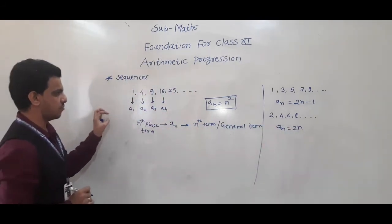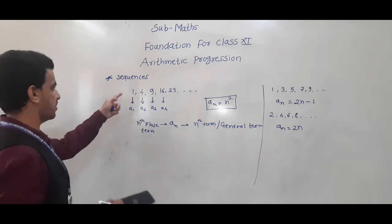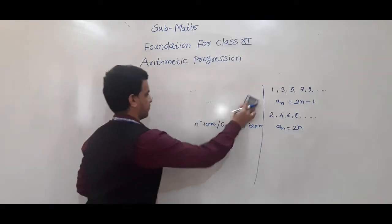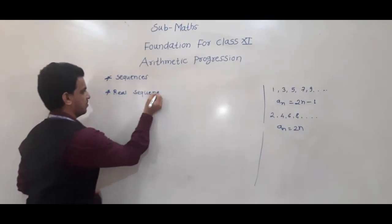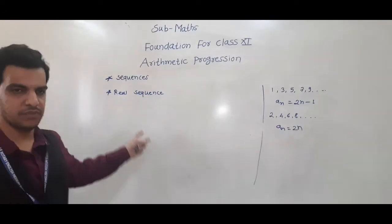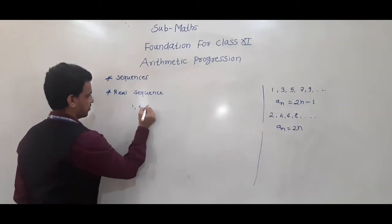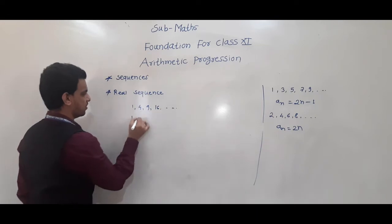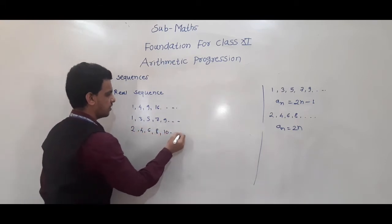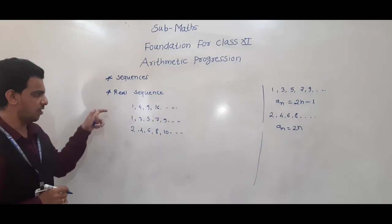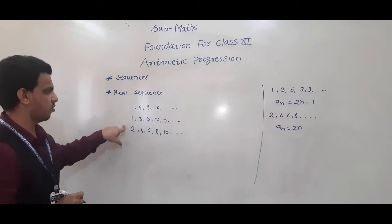Now, we will discuss about real sequence. Real sequence means if the numbers in the sequence are real, then we say that sequence is a real sequence. So, all these sequences — 1, 4, 9, 16 and so on; 1, 3, 5, 7, 9 and so on; 2, 4, 6, 8, 10 and so on — are all real sequences. These are examples of real sequences.